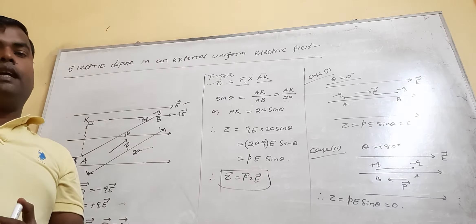What is 2AQ? That is the electric dipole moment, that is P. So tau equals PE sin theta. In vector form, the important expression is: tau vector equals P vector cross E vector. This is the expression for torque acting upon the dipole. Remember, when an electric dipole is placed in a uniform electric field, it experiences zero net force, but it experiences a torque tau equal to PE sin theta.